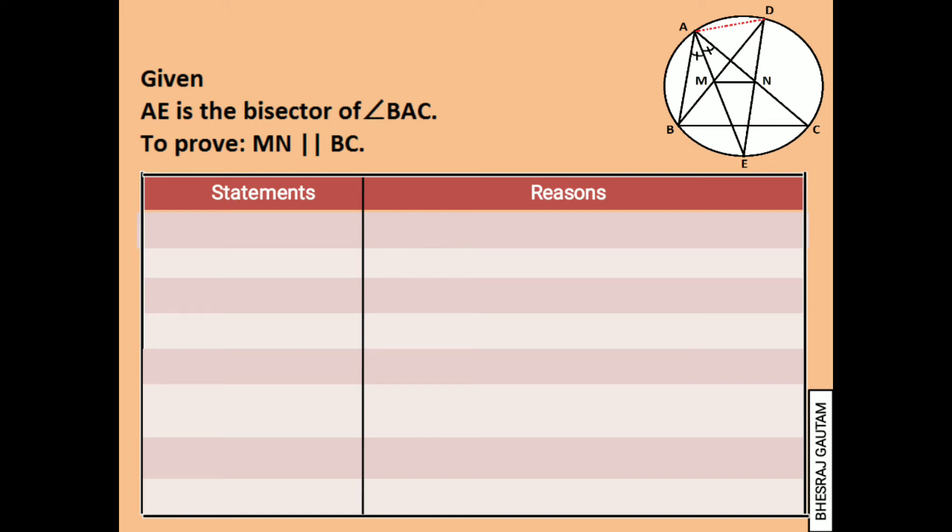First of all let's use the given information. We can say that angle EAC is equal to angle BAE as AE is the bisector of angle BAC. This is shown in the figure itself.